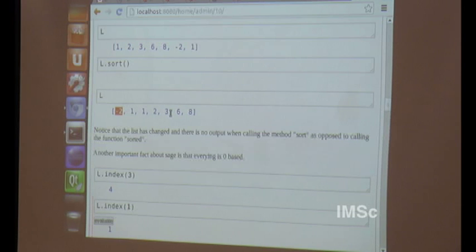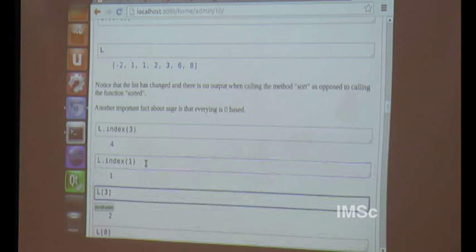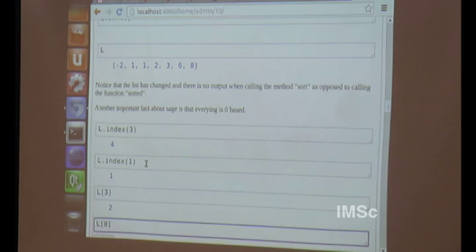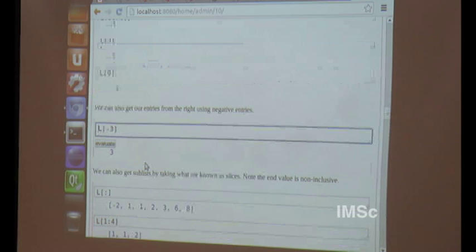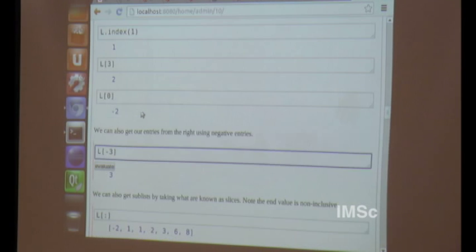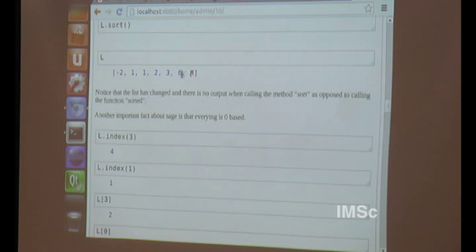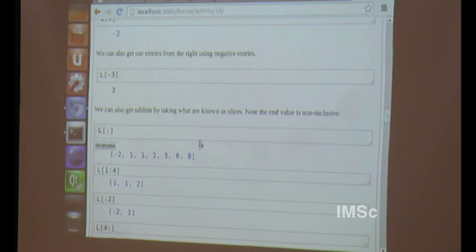Another very important thing about SAGE is that it's zero-based. If I want the index of three, which returns the position of three in the list, you can see three is at position five in the list. But because it's zero-based, the first one is at position zero. Hence, three is at position four. Index also gets the first occurrence. I can get the element at position three with the square brackets. Position zero is minus two, which is the first thing in our list.